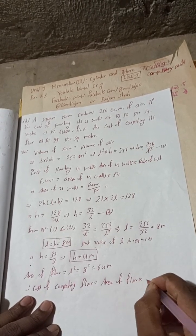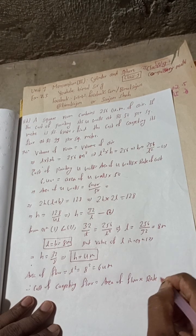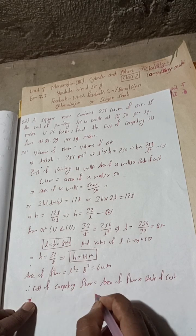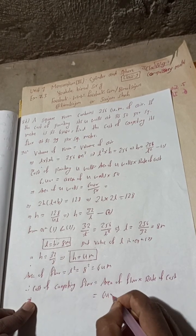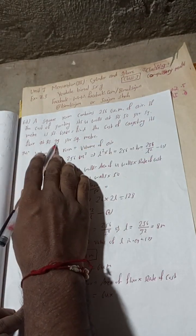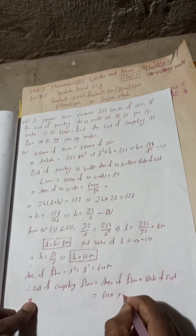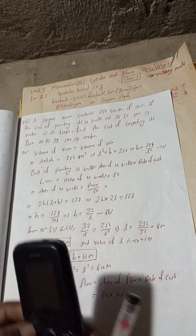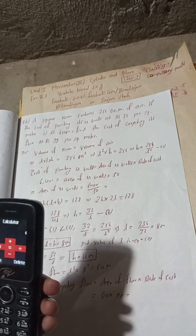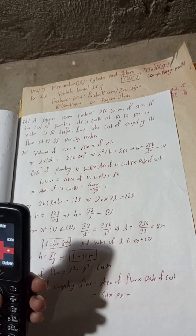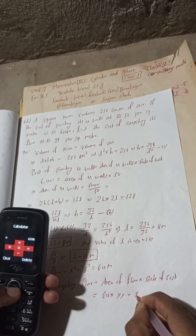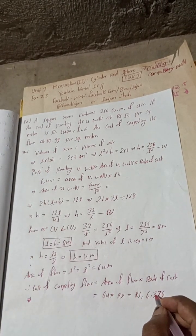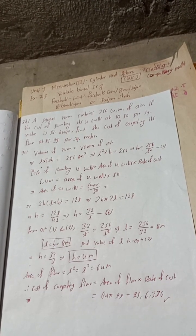Cost of carpeting floor = area of floor × rate of cost = 64 × 99 = Rs 6336. So Rs 6336 is the correct answer. This is the complete solution.